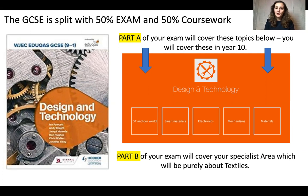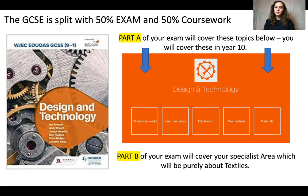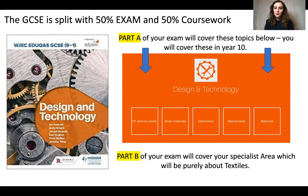In Part A, you'll be covering these topics. As a textile student, you'll still be expected to learn about DT in our world — smart materials, electronics, mechanisms, and different types of materials like wood, plastics, metals, paper and board, and textiles. These are what we call the five core topics for DT. Both workshop and textiles classes will sit the same exam paper and cover Part A together.